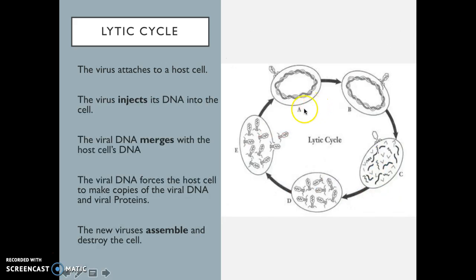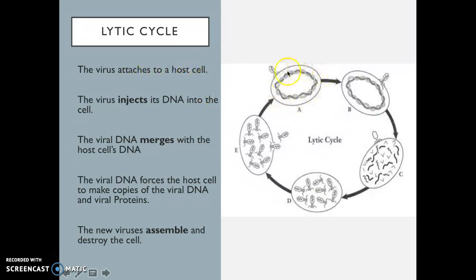The first one is going to be the lytic cycle. Lytic pretty much means to break, to burst, to destroy. There are some different steps you need to remember for this cycle. The first step is the virus is going to attach to the host cell. Then the virus is going to inject the DNA into the host cell. The third step is that the viral DNA will merge with the host cell's DNA. The virus is going to use the organelles and mechanisms inside of the cell to help it reproduce, because viruses cannot reproduce on their own.